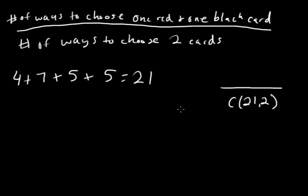So how do we find out the number of ways to choose one red and one black card? Well, let's see. I should have probably labeled these. I'll just use red to represent this. So your hearts, you have seven hearts, so that's seven red cards. And then you have five diamonds, that's five more red cards.